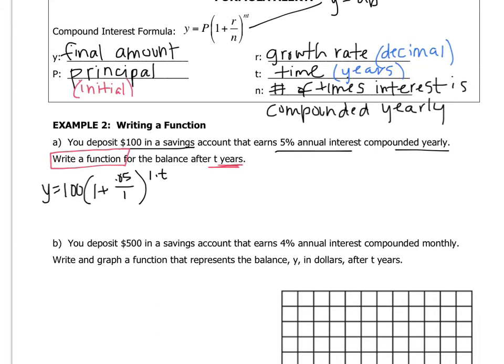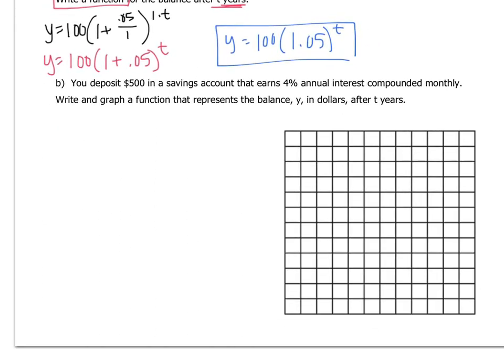And so 1 goes in for N. And now all we can do is just simplify. So we get Y equals 100 plus, or I'm sorry, 100 times 1 plus 0.05 to the T. And I can just do a little more simplification. Y equals 100 times 1.05 to the T. So if the follow-up question asked you or told you how many years the bank account was active, you could plug that in for T and find the amount of money in the account.